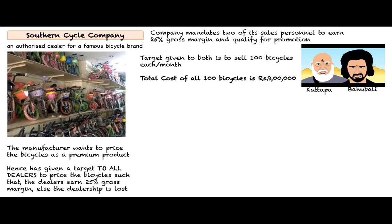The cost of all 100 bicycles is rupees 9 lakh, that is rupees 9,000 each. At the end of the month, Kattapa has sold 100 bicycles at 25% margin and Bahubali has also sold 100 bicycles at 25% margin. So both have performed well and achieved their targets — but what is the difference?